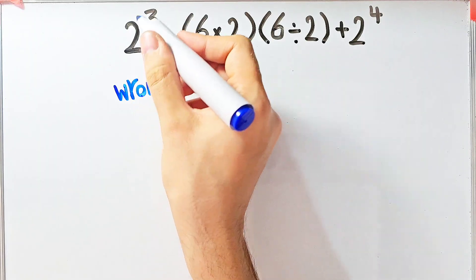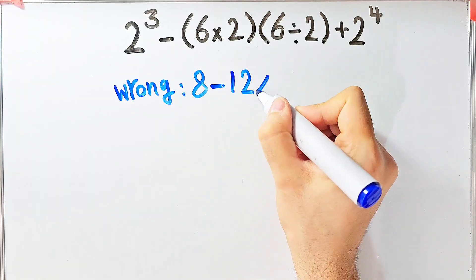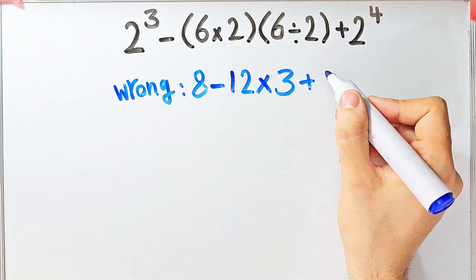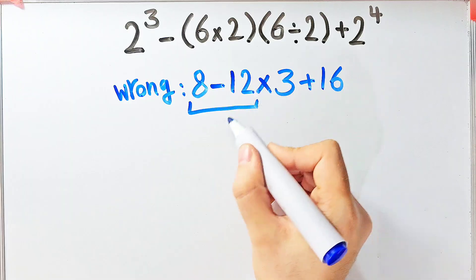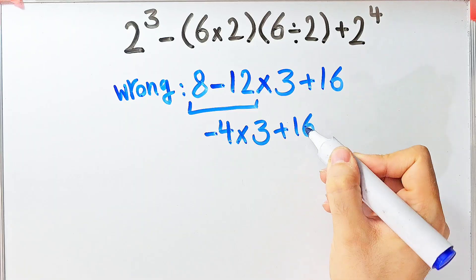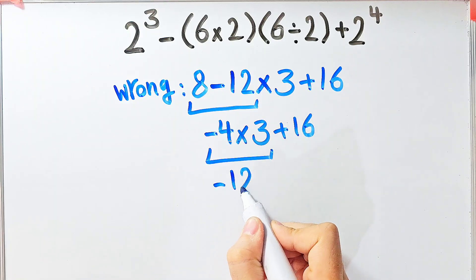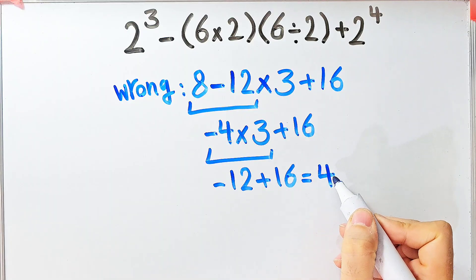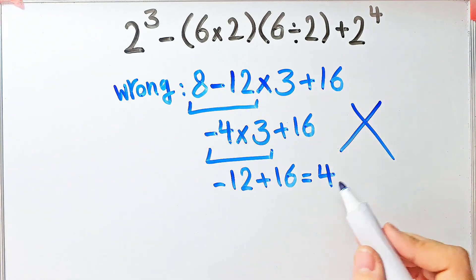For example, some people solve this question like this: two to the power of three equals eight, eight minus six times two equals twelve, then times six divided by two equals three, then plus two to the power of four equals sixteen. Eight minus twelve equals negative four, negative four times three, then plus sixteen. Starting from the left: negative four times three equals negative twelve, negative twelve plus sixteen equals four. They say the final answer equals four, but this answer is definitely wrong.